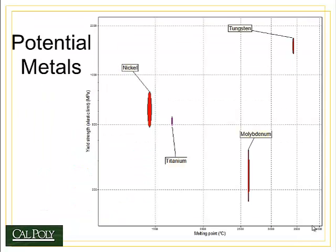Let's look at some potential materials. We have a plot here that compares melting temperature for high temperature metals versus yield strength on the Y axis. Right away we would notice that the ideal material for a jet engine would be tungsten — it has a very high melting temperature, so it can handle the high temperatures, and it has very high strength.